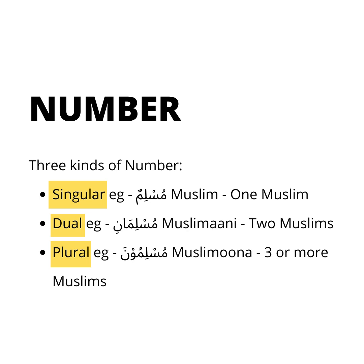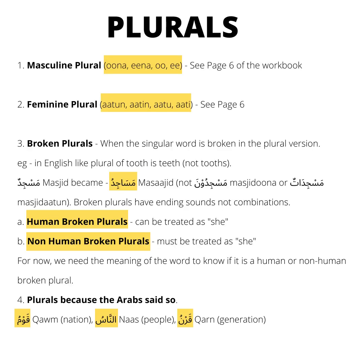There are three kinds of number: singular, dual, and plural. Singular, example Muslimu — one Muslim. Dual, like Muslimani — two Muslims. And plural, like Muslimuna — three or more Muslims. Plurals could be masculine plural with Una and Ina sounds, feminine plurals with Aatun and Aatan sounds, or broken plurals where the singular word is broken in the plural version — like Masjid becomes Masajid, and not Masjiduna or Masjidatun.